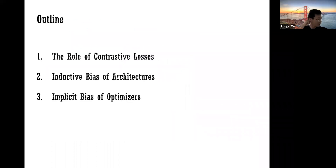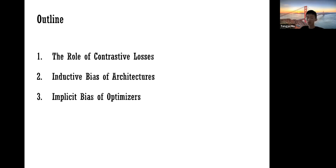There are three parts to this talk. The first part is about the loss function — specifically contrastive loss, which is a popular loss in vision used to learn representations for visual data. The reason for this structure is that we want to isolate the loss function. There are so many things that affect performance — the loss function, architecture, and so forth — and we want to isolate each of them to understand each part separately.